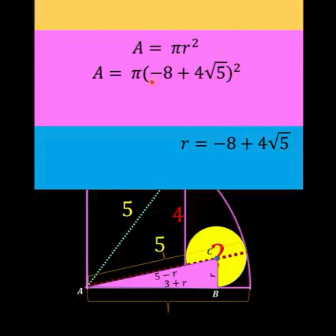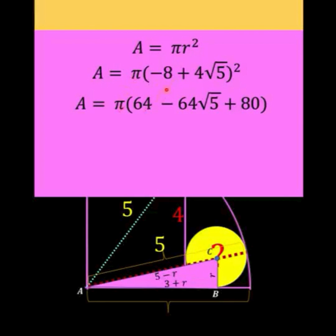Again we have here a square of a binomial which we can again expand. So copy π the square of -8 is positive 64 minus twice the product of -8 and 4√5 to get -64√5 plus the square of the second term. So the square of 4 times square root of 5 is 80. 64 plus 80 is 144 so we can simplify this further this way.